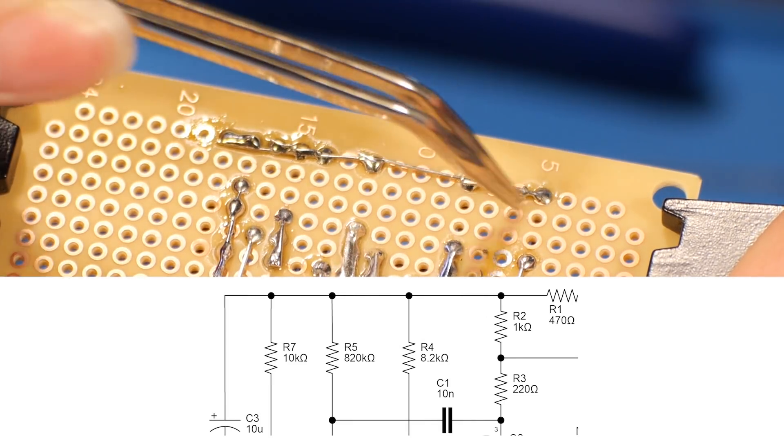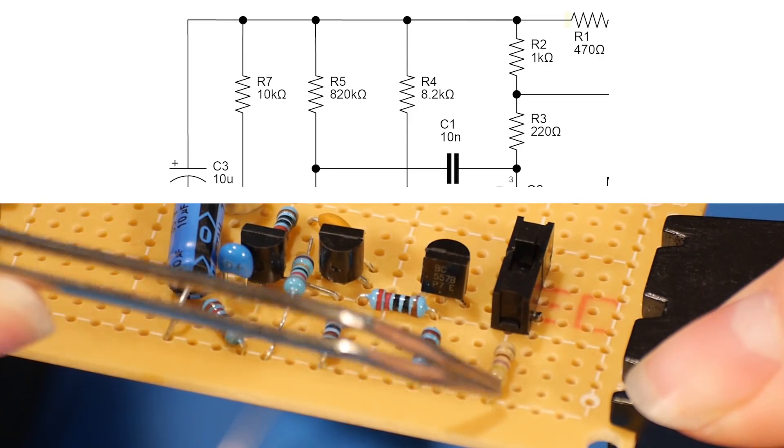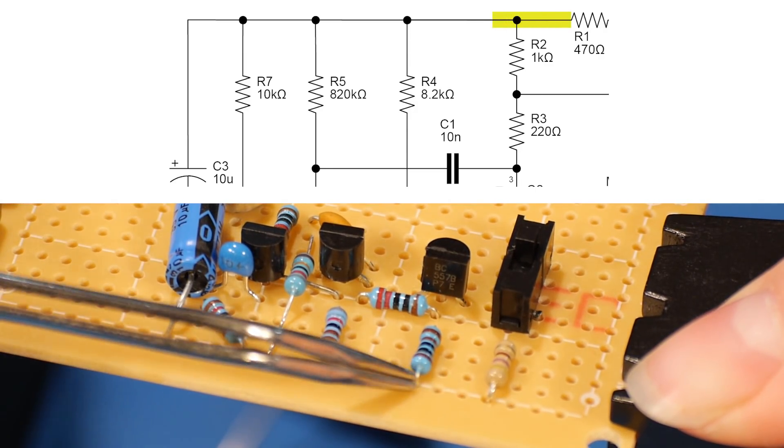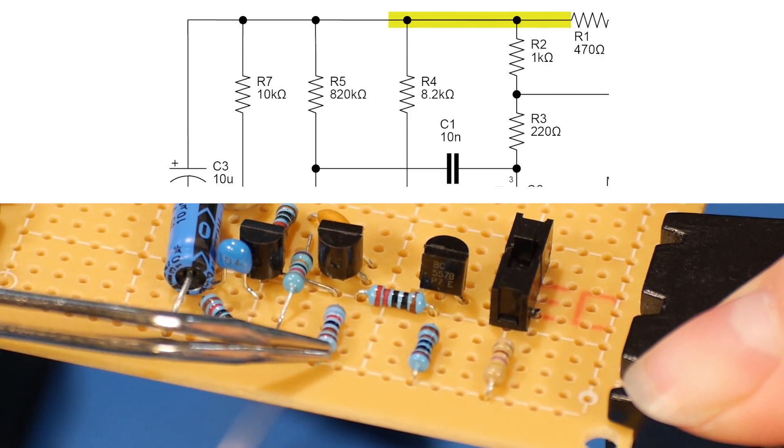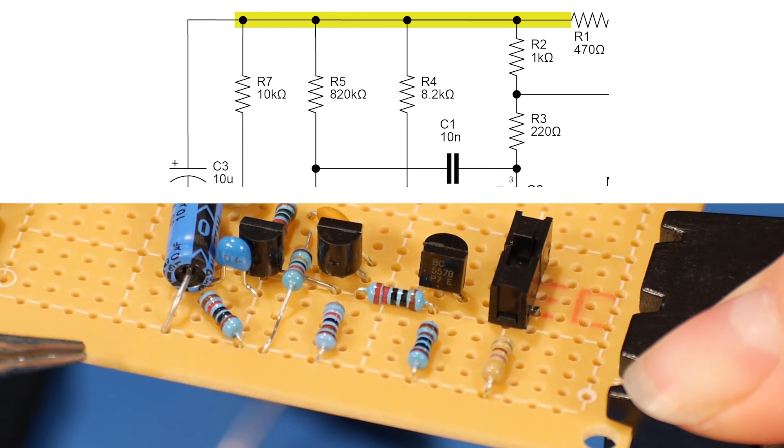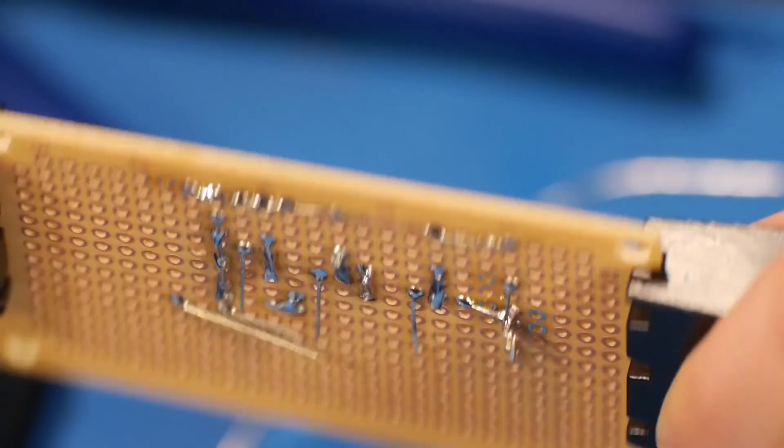Woohoo! Our power plane is complete! We've got R1, R2, R4, R5, R7, and C3. Oh yeah!